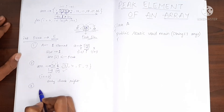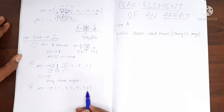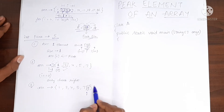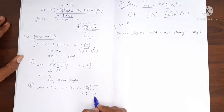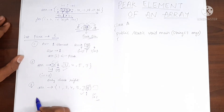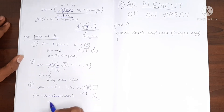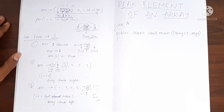Case number 3 is for the last element. When i points to the last element, we can see that it does not have a right neighbor, but it does have a left neighbor. So when we are checking for i equal to the last index, what we have to do is only check for the left element. These are the three conditions which we have to implement in our program, so let's now write the code.